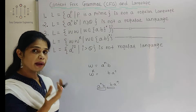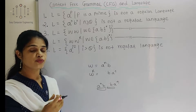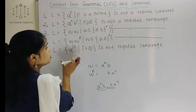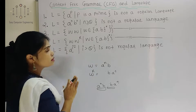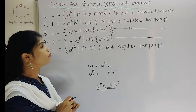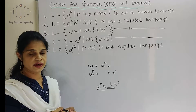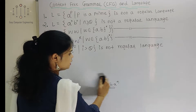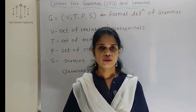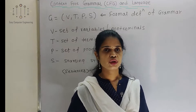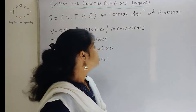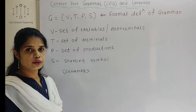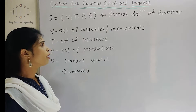These are some examples which we cannot represent with the help of regular languages, but we can represent them with the help of context-free grammar. So what is context-free grammar? We will see the formal definition of grammar. G equals (V, T, P, S) — these are the four tuples, or we can say quadruples.